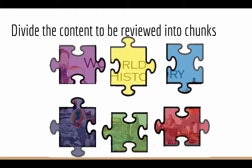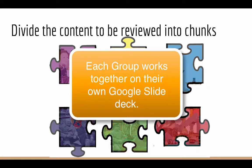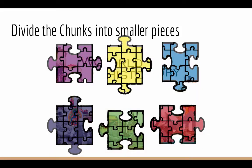From there, get the groups to separate off and work on their own on creating a review Google Slides for their unit. Within this you may actually want to divide those chunks into smaller pieces — so from chapters you go to lessons, from units you go to chapters, however it works. Those smaller pieces then can get assigned to different students, and the students can work on their own to get one or two, maybe three slides together. Not a lot of detail, but enough to provide good quality review for the upcoming assessment.